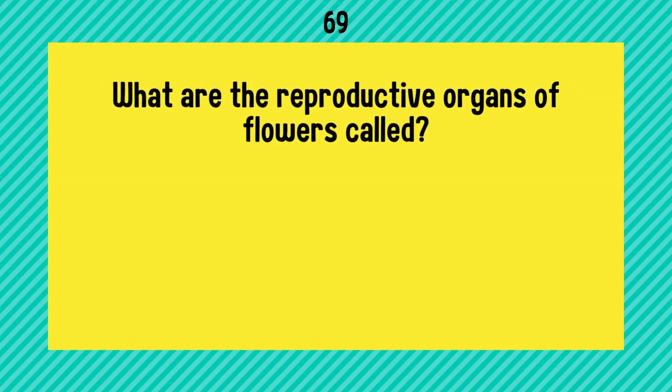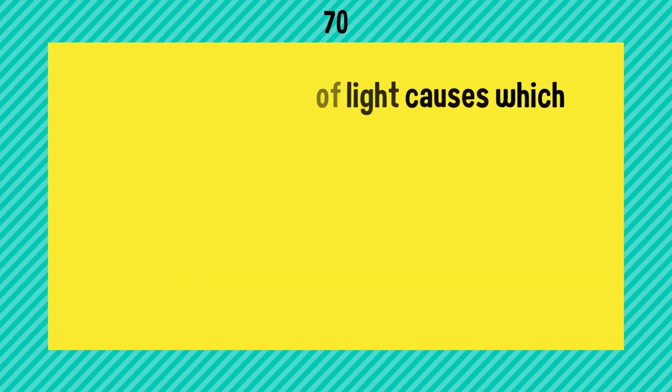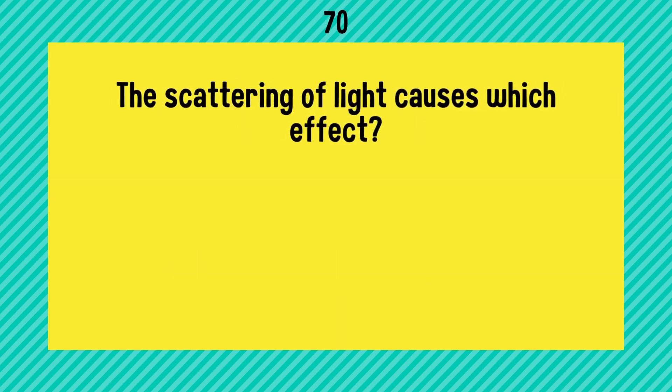What are the reproductive organs of flowers called? Stamens for male and carpels for female. The scattering of light causes which effect? Answer is Tyndall effect.